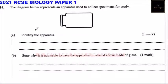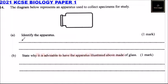Question number 14. The diagram below represents an apparatus used to collect specimens to study. So we have our apparatus here. Part A: Identify the apparatus. This is a specimen bottle.